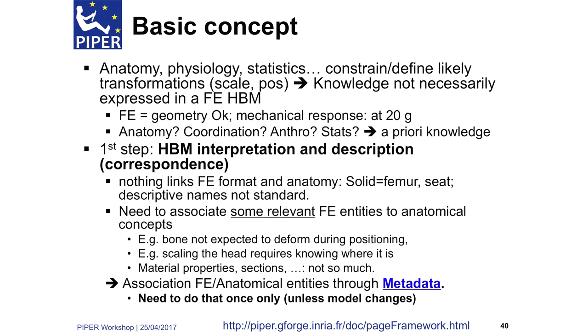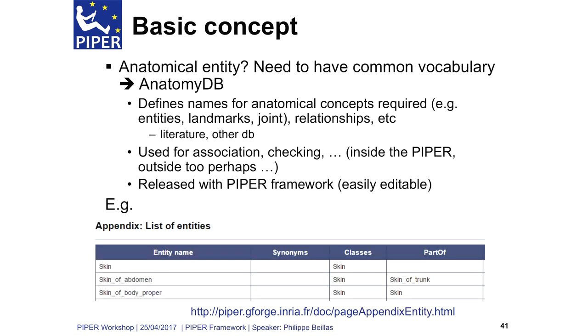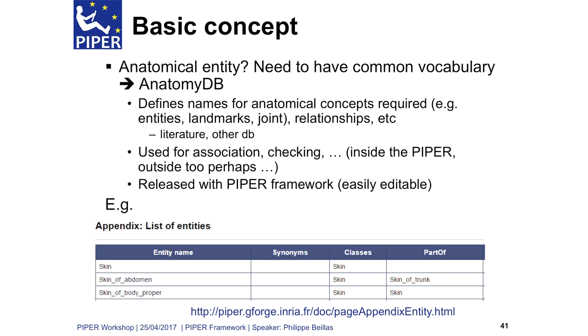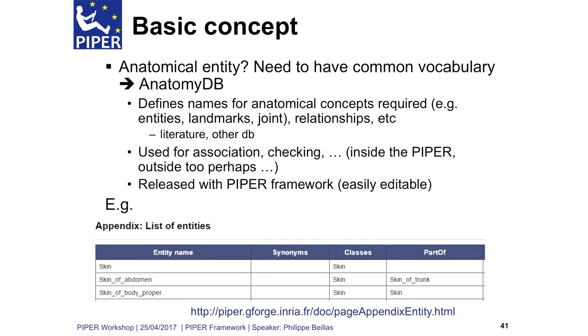Metadata needs to be done only once unless the model changes, so there will be a whole presentation on that. Then there is the concept of anatomical entities — if we want to exchange between modules and methodologies we need a common vocabulary. We created a database, derived from other databases such as FMA, where we define joints, common names, and properties like whether something is rigid or deformable. This database is in the manual and is easily editable.